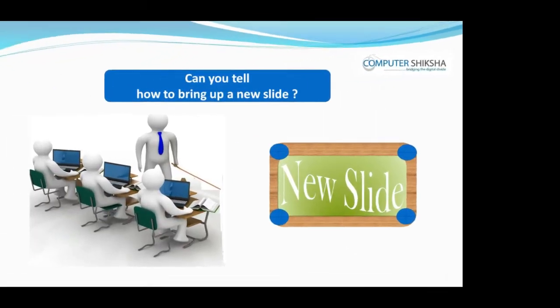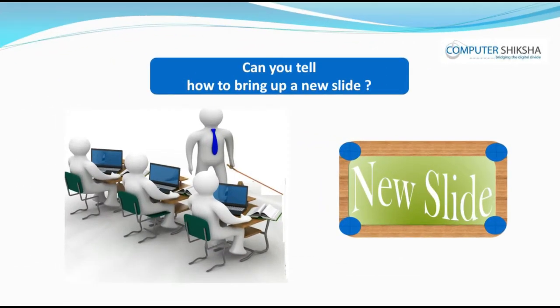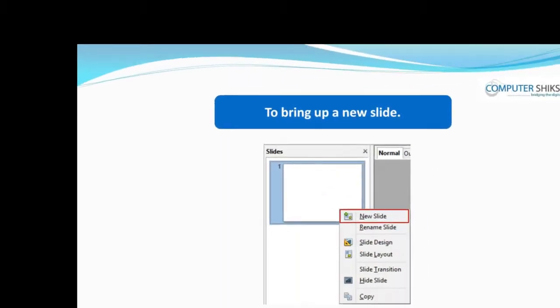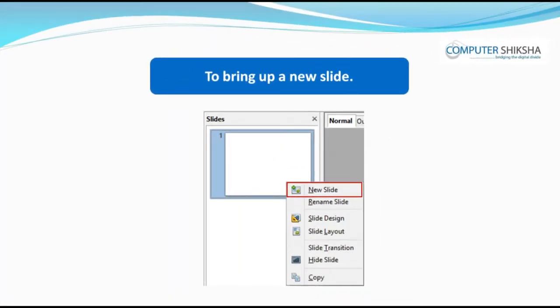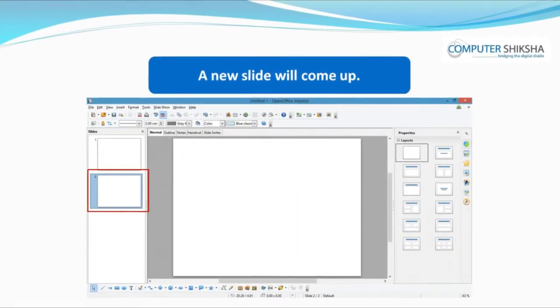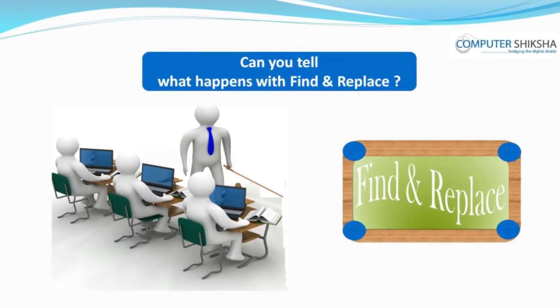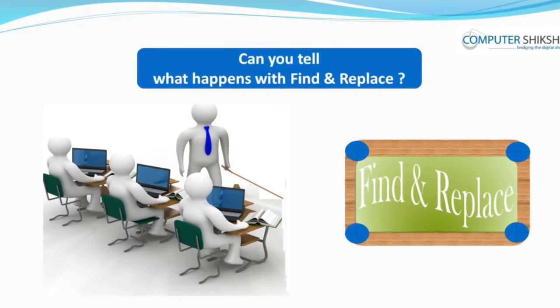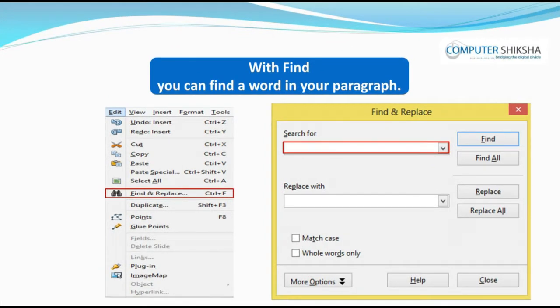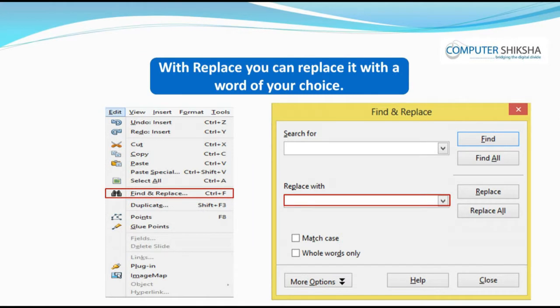Can you tell how to bring up a new slide? In order to bring up a new slide, you need to right-click on the slide pane and then click on the new slide option there, and a new slide will come up. Can you tell what happens with find and replace? With find, you can find a word in your paragraph, and with replace, you can replace it with a word of your choice.